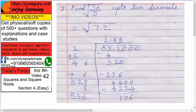So you get 2.68. That is the required answer up to two decimals only.